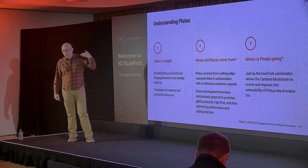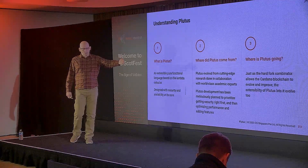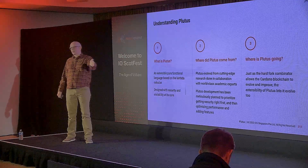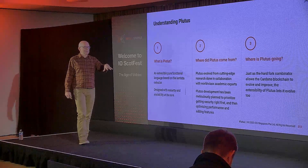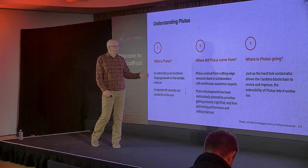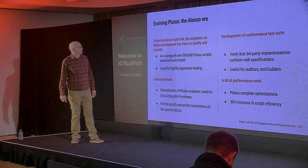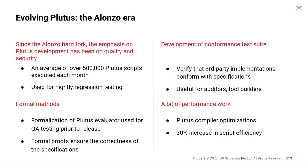Where are we going with Plutus? Part of this design was that it's extensible — just like on Cardano, we extend Cardano using the hard fork combinator to go to successive eras, and Plutus has the same capability. Looking back: a year ago, we launched in the Alonzo era — that was when Plutus hit the main net. Since then, we've seen on average about 500,000 — half a million — Plutus scripts or more executed each month. Part of the reason I know that is our team actually uses those scripts in a nightly regression system to check the implementation of new code. We're always focused on quality.